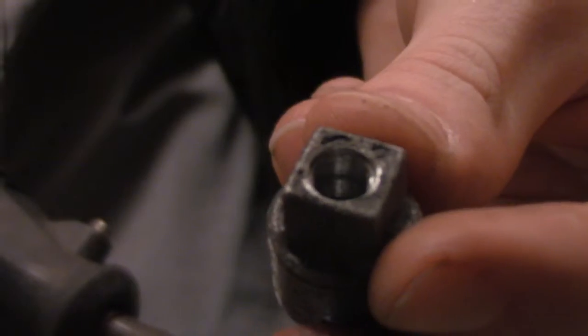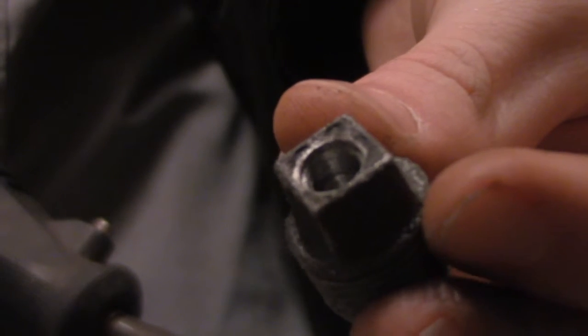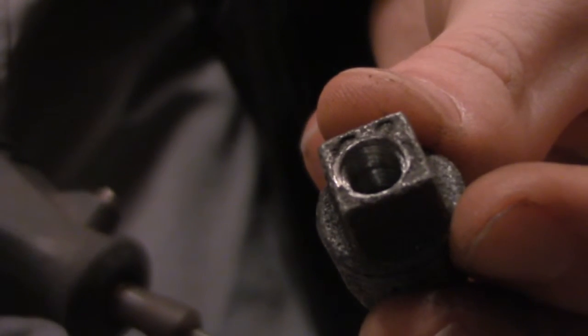Once we've done that, we'll take the Dremel tool and smooth everything down. As you can see, it's all nice and smooth. That's it, that's how you make a solid rocket nozzle.